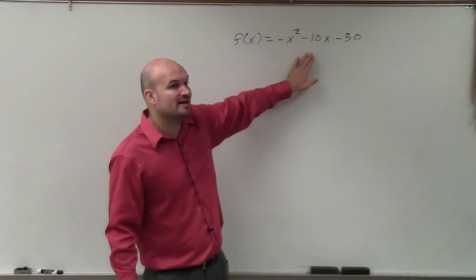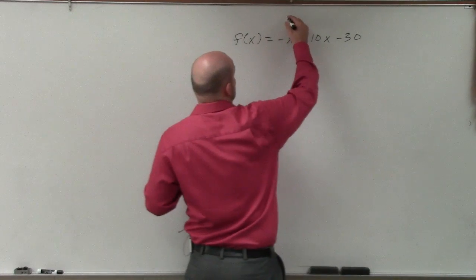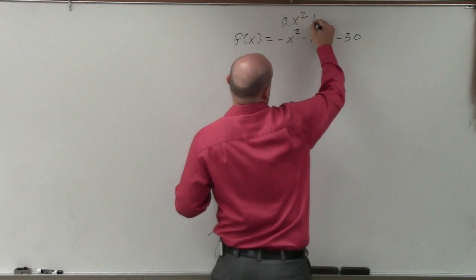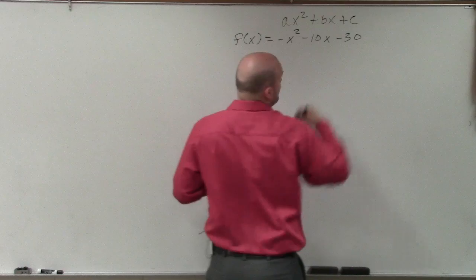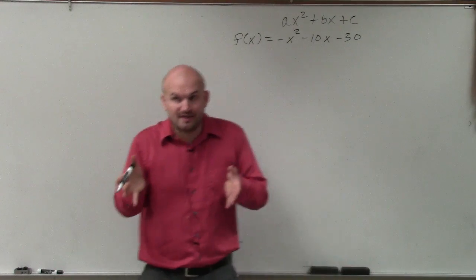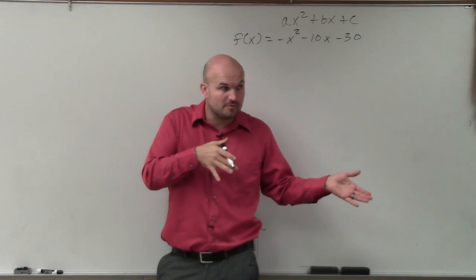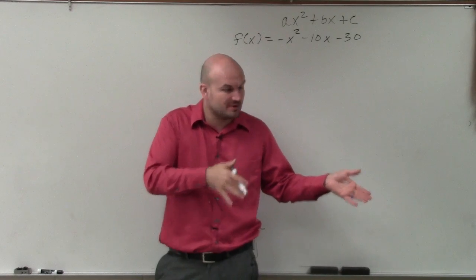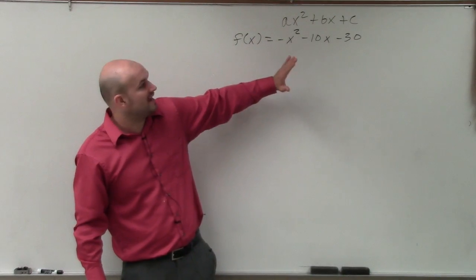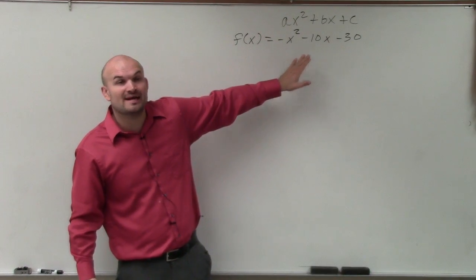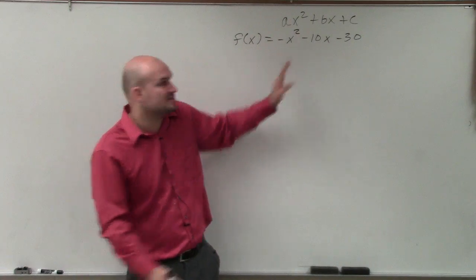So if I was going to graph this without writing it in vertex form, you guys can see that this is in standard form, ax squared plus bx plus c. So we previously said we could rewrite this in vertex form using completing the square. That's what we did last homework. This homework, though, is saying, hey, you know what? We can leave it in this format and still find the axis of symmetry and the vertex.